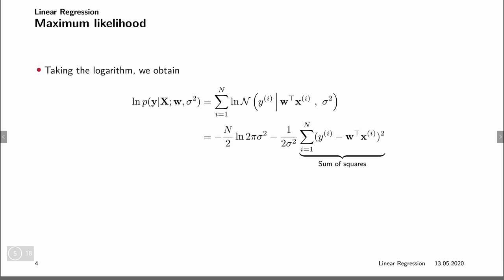We can perform maximum likelihood estimation in this model. Similarly to the way we did it before with the Gaussian, we do it by looking not at the likelihood itself but at the log likelihood. Remember, the log of the function has the same maximum value as the function itself. So the log of this likelihood — the product is replaced by a sum — is just the sum over all data points of the log of the normal distribution.